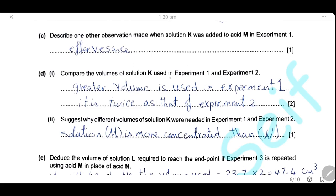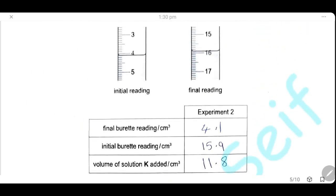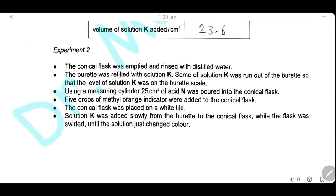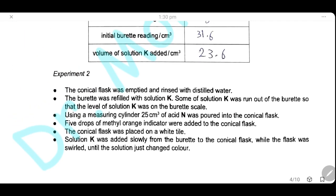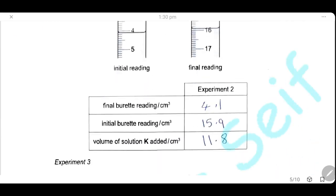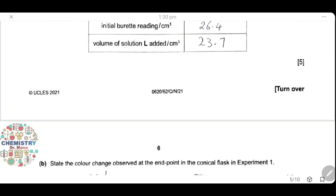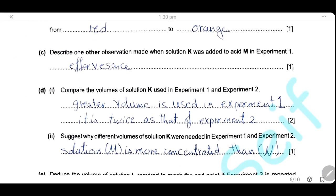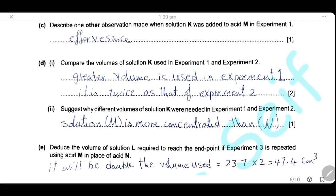Compare the volume of solution K that is used in experiment 1 and in experiment 2. In experiment 1, we used 23.6 cm³. And in experiment 2, we use 11.8 cm³. So we use a greater volume in experiment 1. It is twice as that in experiment 2.